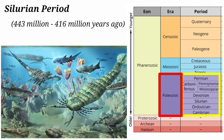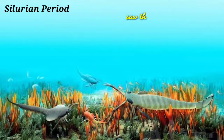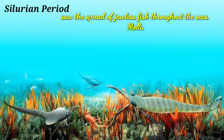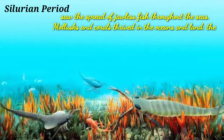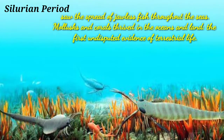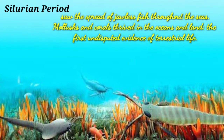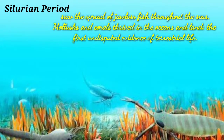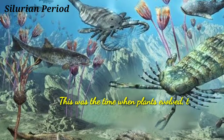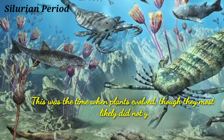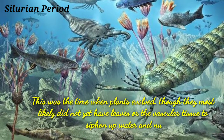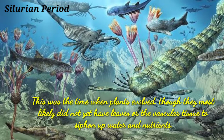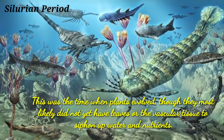Next is the Silurian period, which occurred 443 million to 416 million years ago. This period saw the spread of jawless fish throughout the seas. Mollusks and corals thrived in the oceans, and on land there was the first undisputed evidence of terrestrial life. This was the time when plants evolved, though they most likely did not yet have leaves or vascular tissue to absorb water and nutrients.